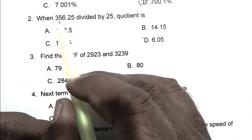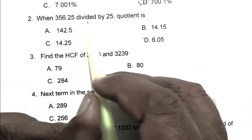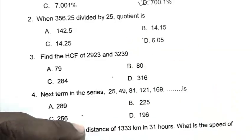Question number two: 356.25 divided by 25, quotient is. So we divide 356.25 by 25.